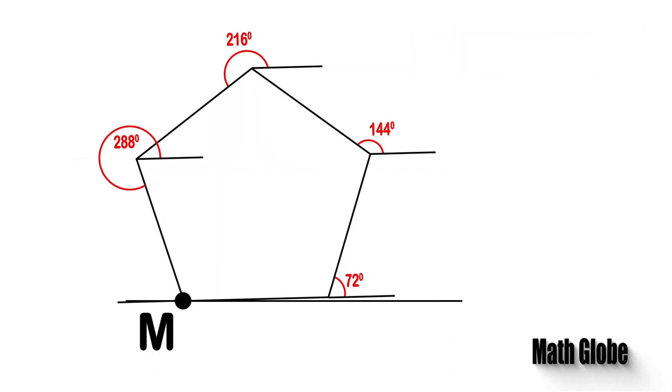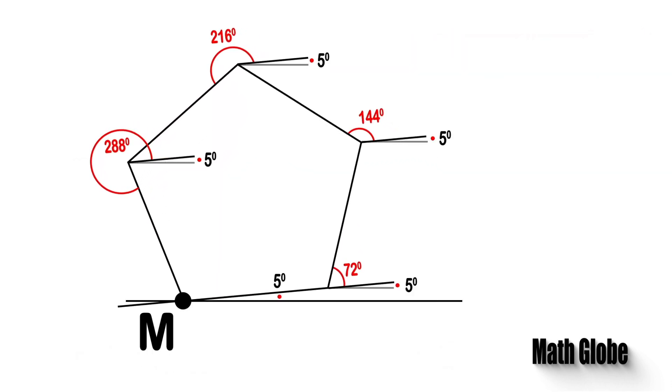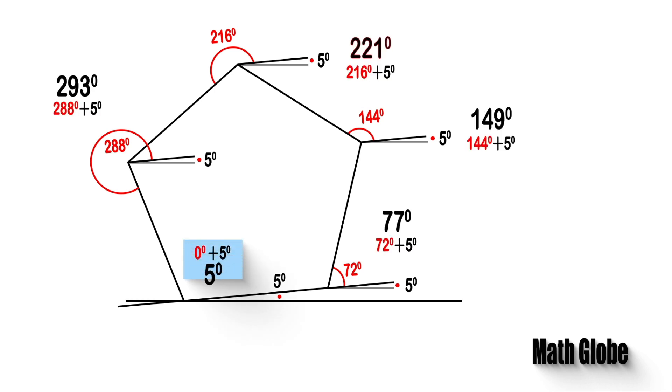Likewise, if we rotate shown pentagon 5 degrees about point M, and do the same calculation that we did. The measure of the red angles will be 5, 77, 149, 221 and 293 degrees.